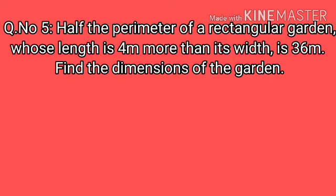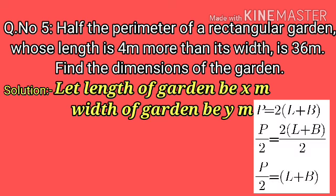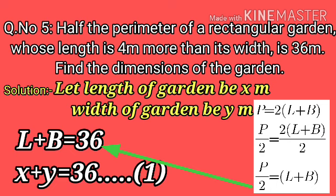Now question number 5: Half the perimeter of a rectangular garden, whose length is 4 metres more than its width, is 36 metres. Find the dimensions of the garden. Let the length be x metres and width be y metres. Since the perimeter is 2(l + b), half the perimeter is l + b = 36. So x + y = 36. This is equation number 1.